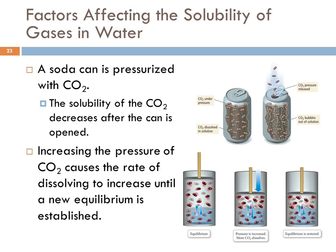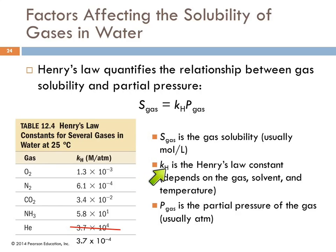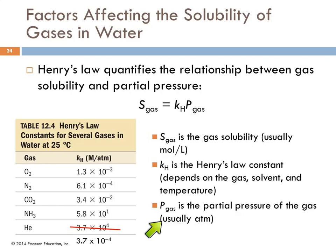A lot of these things are equilibrium processes — something going in one direction, something going in another, each with a rate involved, reaching dynamic equilibrium when the rates are equal. It happens with evaporation, with dissolution, all kinds of things. We actually quantify the effect of pressure on the solubility of gases in water — this is called Henry's Law. The solubility of a gas is dependent on the partial pressure of that gas. S-gas is the solubility of the gas, usually expressed in moles per liter. K-h is Henry's Law constant, which depends on the gas, the solvent, and the temperature.